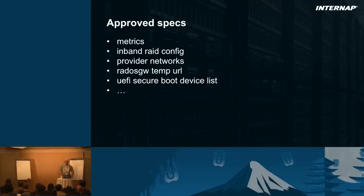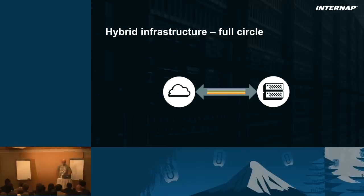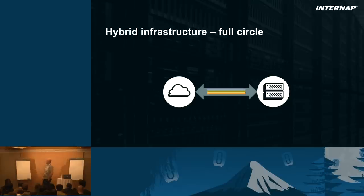There's plenty of traction around Ironic, and as seen in the keynotes, containers will probably help Ironic gain even more traction. We're back full circle to our hybrid infrastructure from the start. The only difference is that these customers can now use a central point to spin up new physical servers, or if they need to extend with virtual machines, they can do that too. The goal is to bring these customers into OpenStack, and with the virtual and bare metal side of it, we're in good shape to do that.